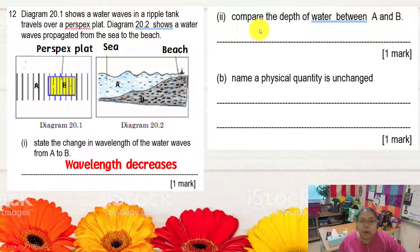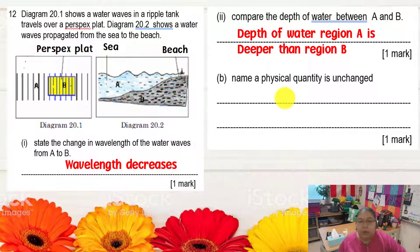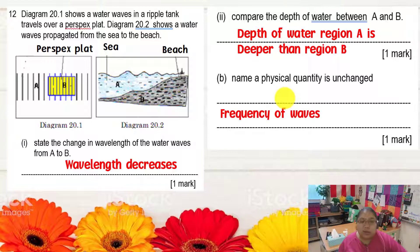Number two asks to compare the depth of water between A and B. The depth decreases — we go from deep to shallow. So region A is deeper than region B. Number three asks for a physical quantity that is unchanged from A to B. The only constant quantity is frequency. Wavelength changes, velocity changes, and direction changes — only frequency remains constant.